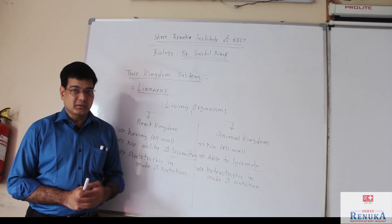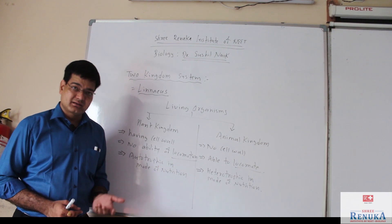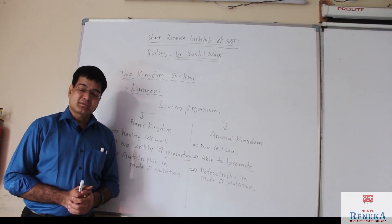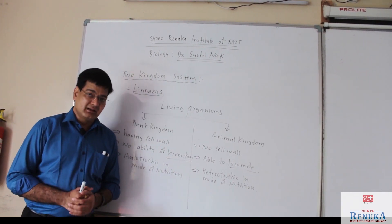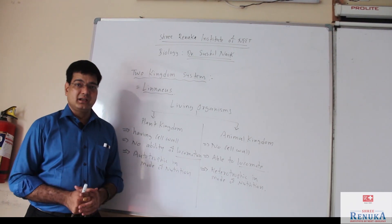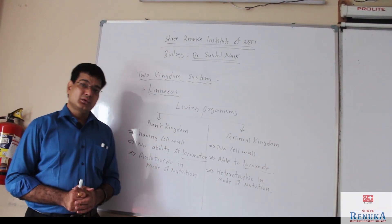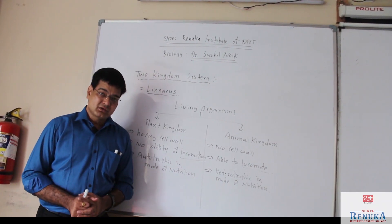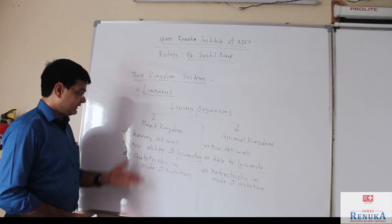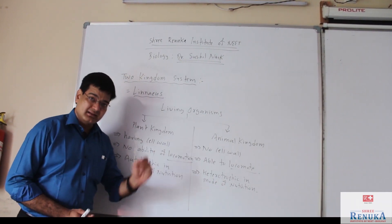If we talk about fungi, it is plant-like, but it is not able to carry out photosynthesis and it is heterotrophic — simply saprophytic or parasitic in mode of nutrition. So fungi cannot be classified as plant or animal according to these criteria.